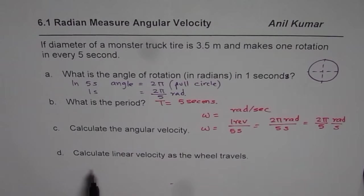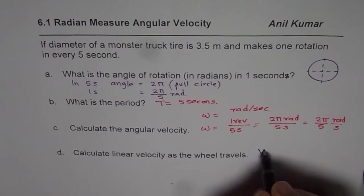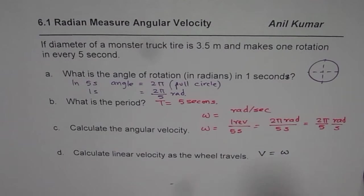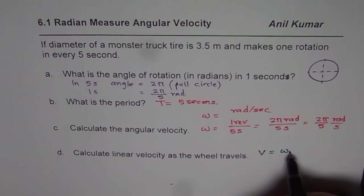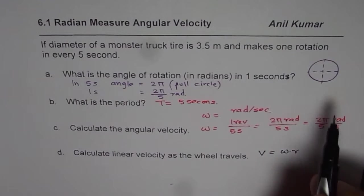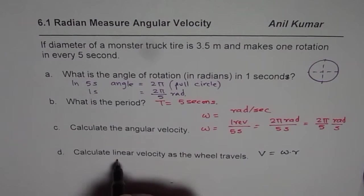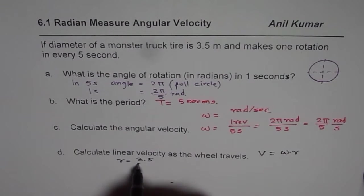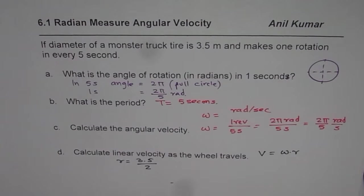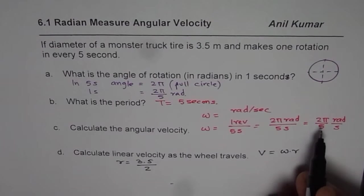The last question here is, calculate linear velocity as the wheel travels. Now, what is the relation between angular and linear velocity? Linear velocity v equals omega times radius. So we can write v equals to omega times radius. The radius for this tire is half of 3.5. So radius is equal to 3.5 which is a diameter divided by two. And omega we know is two pi by five.